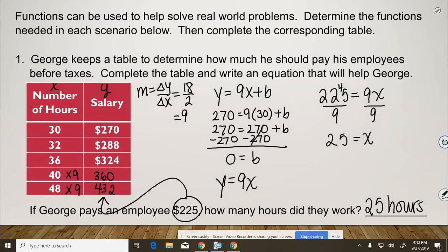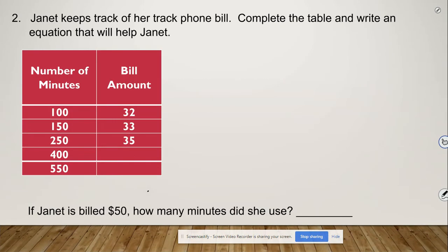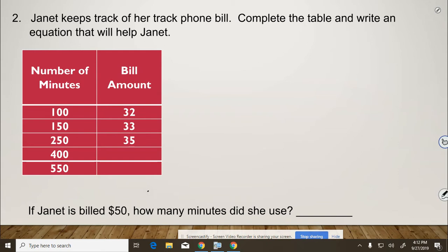Alright, let's take a look at another example. Number two, Janet keeps track of her track phone bill. Complete the table and write an equation that will help Janet. So again, we start by creating our slope. So 32 to 33 is increasing by 1. 100 to 150 is increasing by 50.